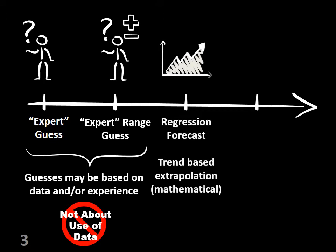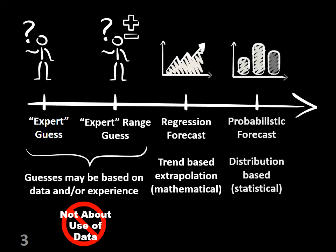When we start getting onto forecasts, we look at extrapolating a trend — a mathematical process of taking what's happened historically and projecting it forward as a linear or polynomial projection. This is the simplest forecast: a regression forecast, and most tools do this pretty well — Excel, for instance.